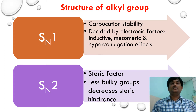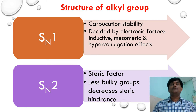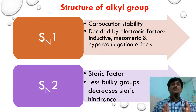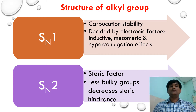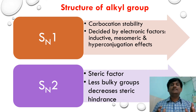In an SN2 reaction, the nucleophile attacks the reaction center from the backside, opposite to the leaving group. The ability of the nucleophile to reach the reaction center depends on the nature of the substituents attached to the reaction center. Steric factors play a vital role in determining the rate of an SN2 reaction.